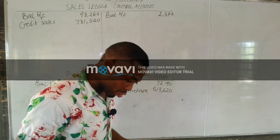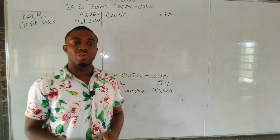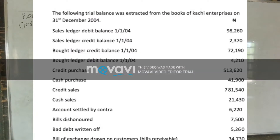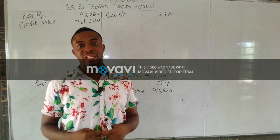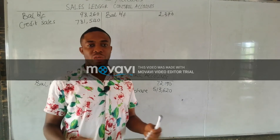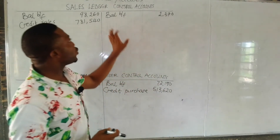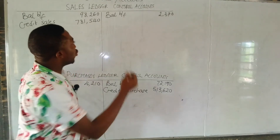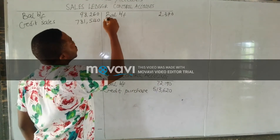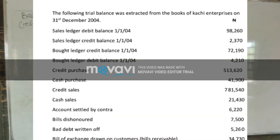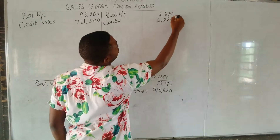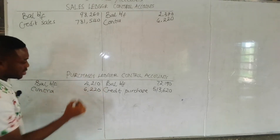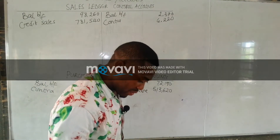Next is accounts settled by contra — also called set-off. A contra entry occurs when a customer is also a supplier: you sold to them on credit and also bought from them on credit, so the amounts cancel each other. This reduces the debtor's balance, so we post the contra of $6,220 to the credit side of the sales ledger and the same $6,220 to the debit side of the purchase ledger.